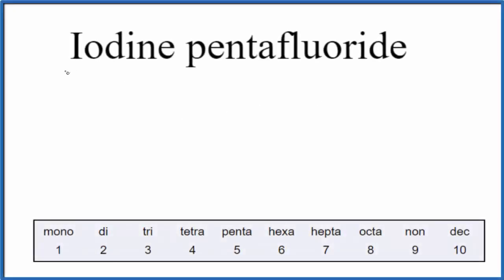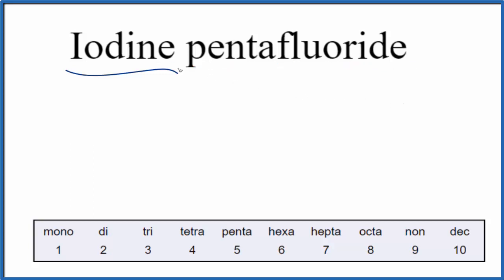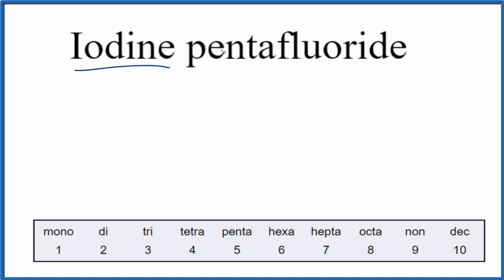To write the formula for iodine pentafluoride, we first need to recognize that iodine is a non-metal, and fluoride — that's from fluorine — is also a non-metal. Two non-metals means we need to use these prefixes to write the formula for iodine pentafluoride.